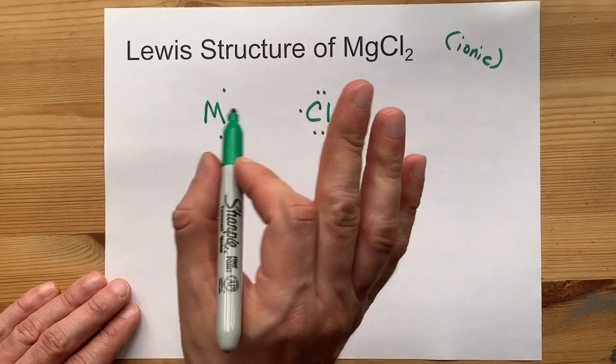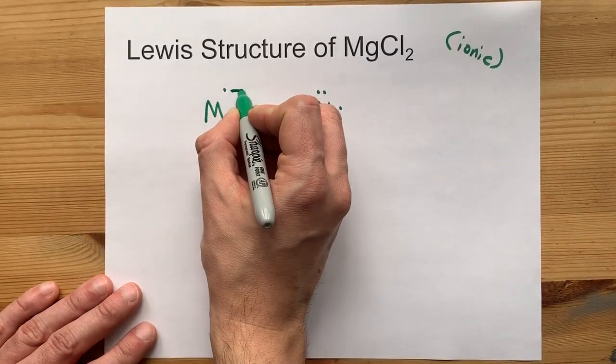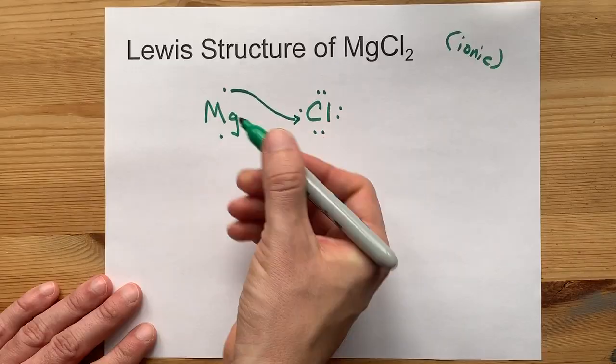This magnesium is a metal and will gladly give up its electron. There it goes. Gone.